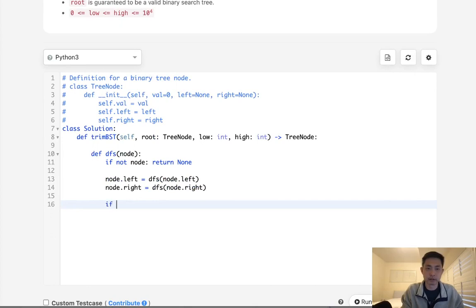Now we want to check to see our conditions. So if the node.value, if it's less than low, what do we want to do? We want to return everything on its right. Otherwise, if it's greater than high, we want to return everything to the left. Otherwise, just return the node.